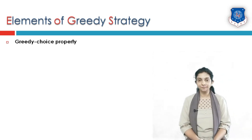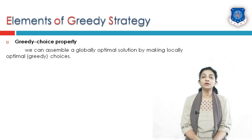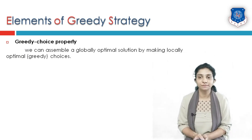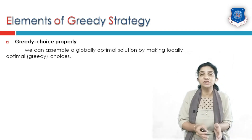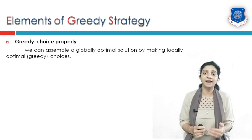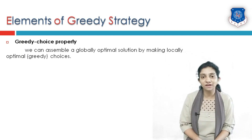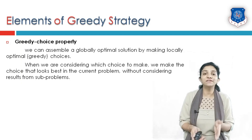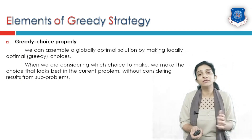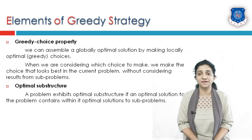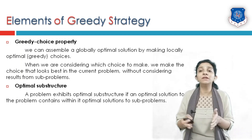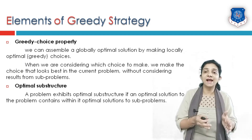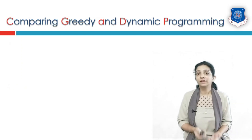The elements of greedy strategy: first is the greedy choice property, which says we can assemble a globally optimal solution by making locally optimal choices. If we take a decision that is beneficial at a particular state, the overall final result is also expected to give benefit. We make the choice that looks best in the current problem without considering future results. Optimal substructure says that if a sub-problem is solved optimally, the original problem will also be solved optimally.